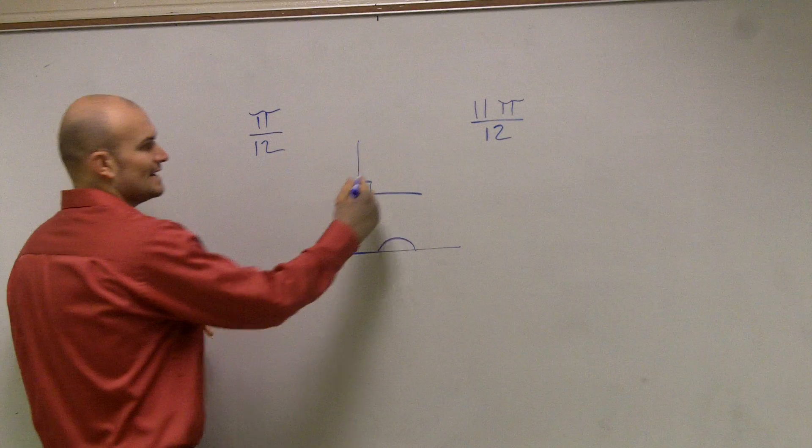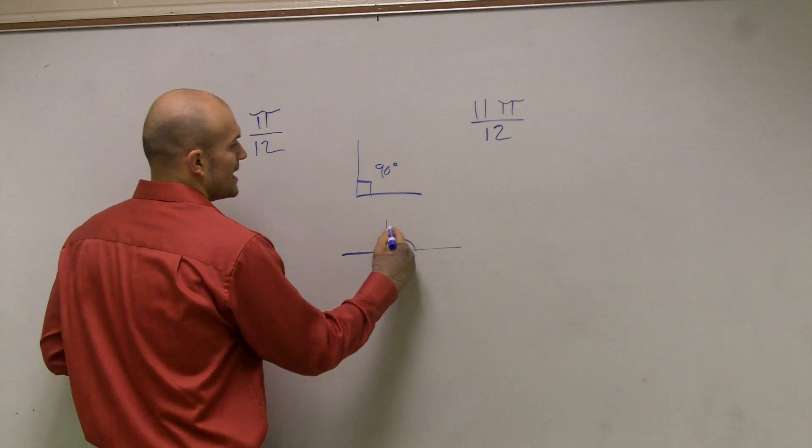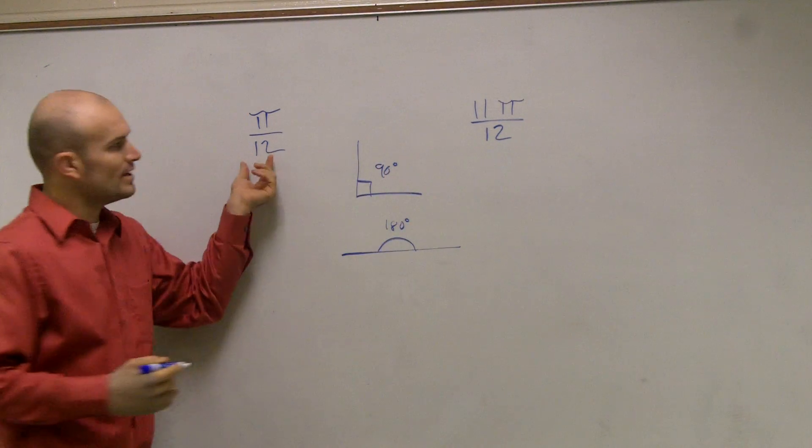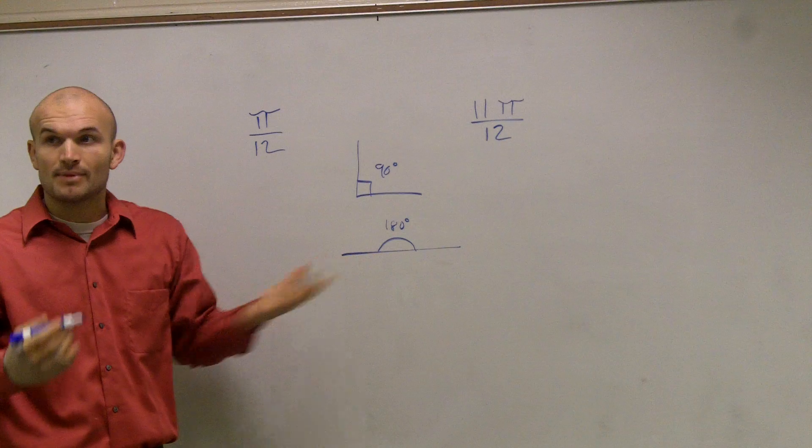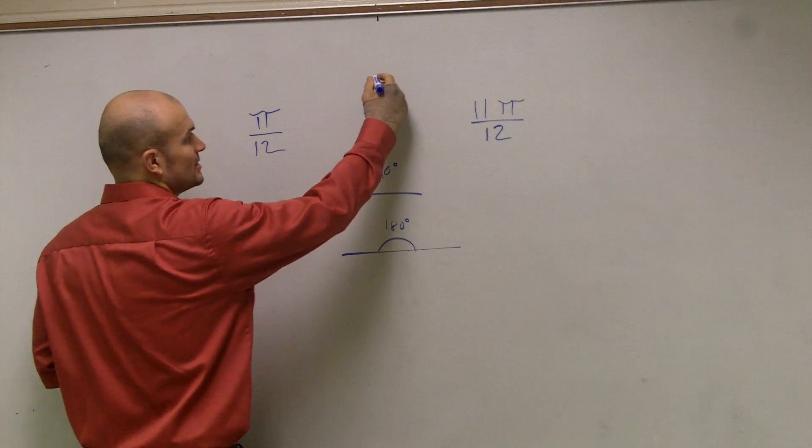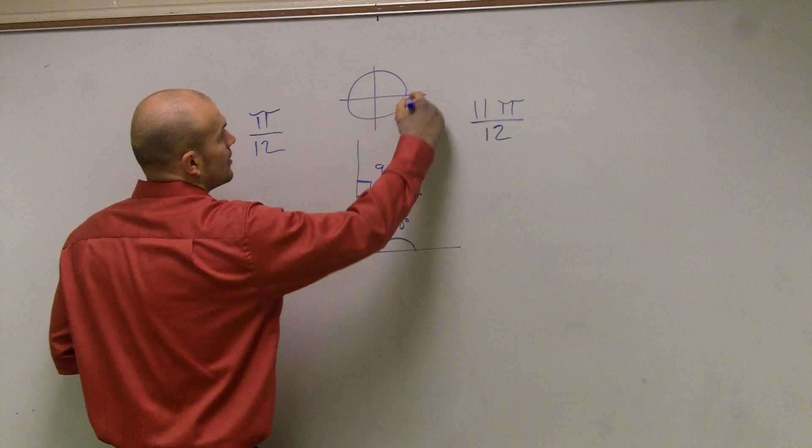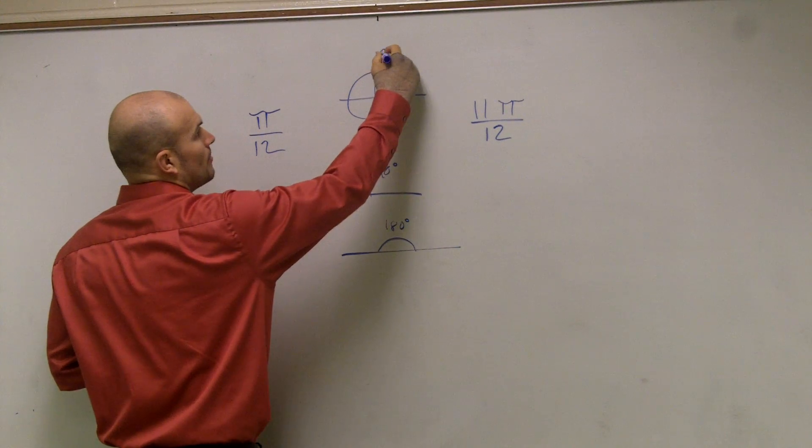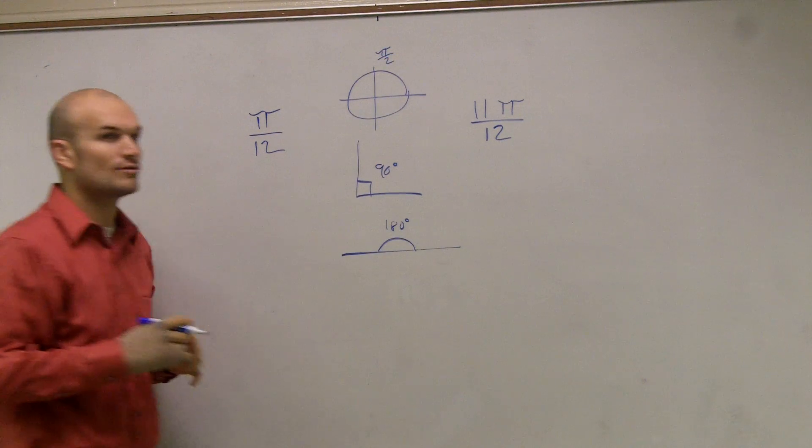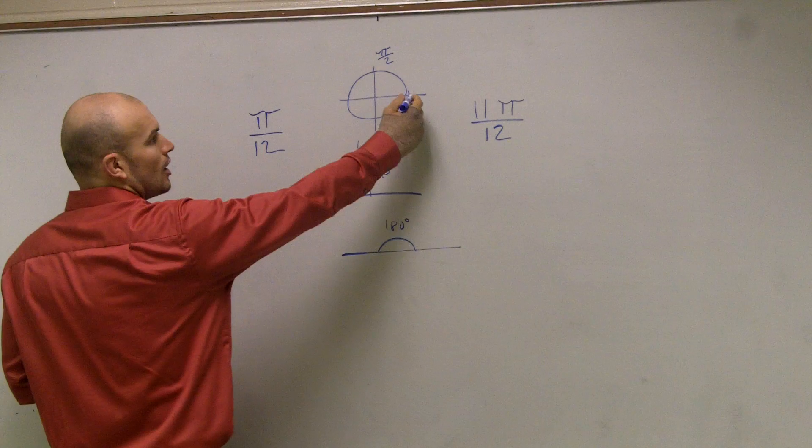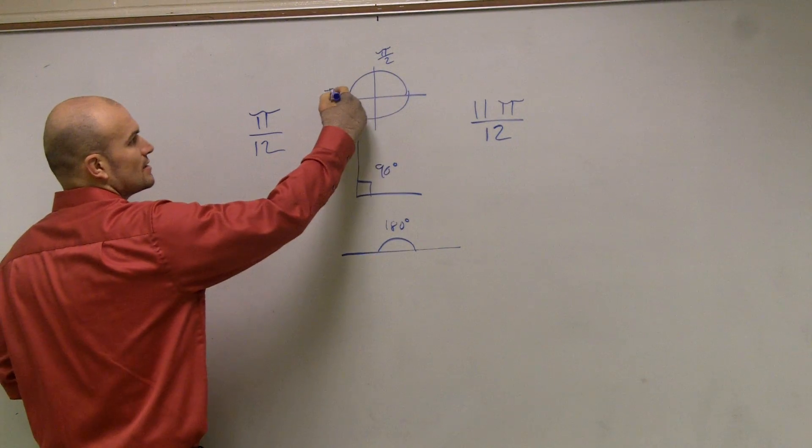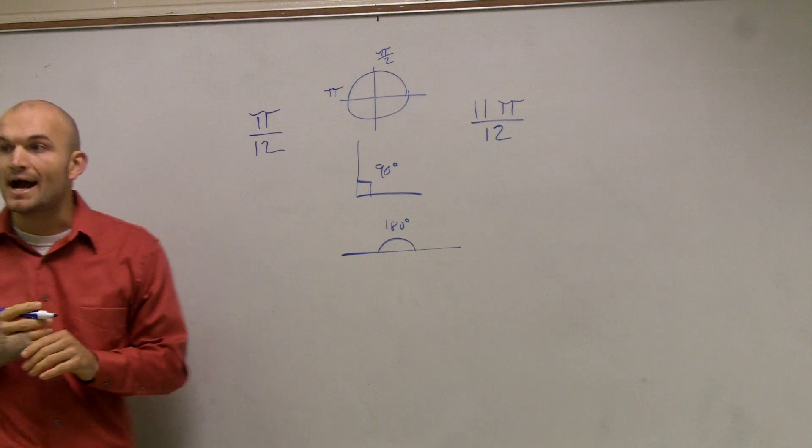However, we're not dealing with 90 degrees and 180 degrees when we talk about radians. What we're talking about is we're dealing with radians. So if you think about the unit circle, 90 degrees is what we call π over 2 radians. And all the way over 180 degrees is what we call π radians.